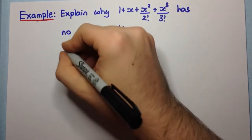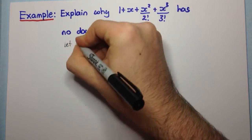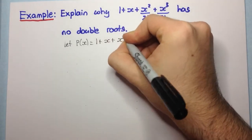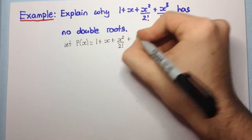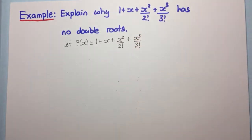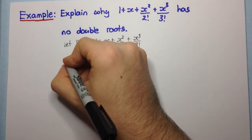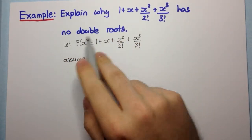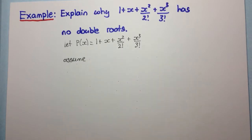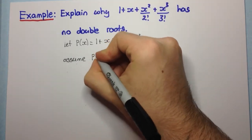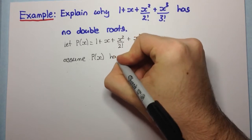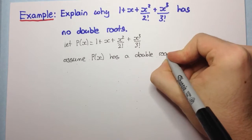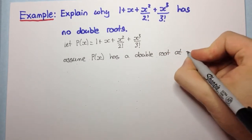First, let p of x equal 1 plus x plus x squared over 2 factorial plus x cubed over 3 factorial. Now we can assume the opposite of what we want to prove. We want to prove that it has no double roots, so let's assume that p of x does have a double root. Assume p of x has a double root at x equals alpha.